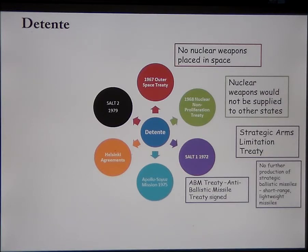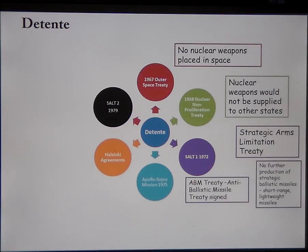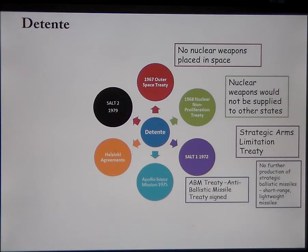In SALT I, there are no restrictions placed on strategic bombers, and no restrictions placed on MIRVs — Multiple Independently Targetable Reentry Vehicles. They do agree that each side is allowed to use satellites to check the other side is not breaking the arms limit, and they agree a five-year freeze on the total number of intercontinental ballistic missiles. This is definitely moving in the right direction.